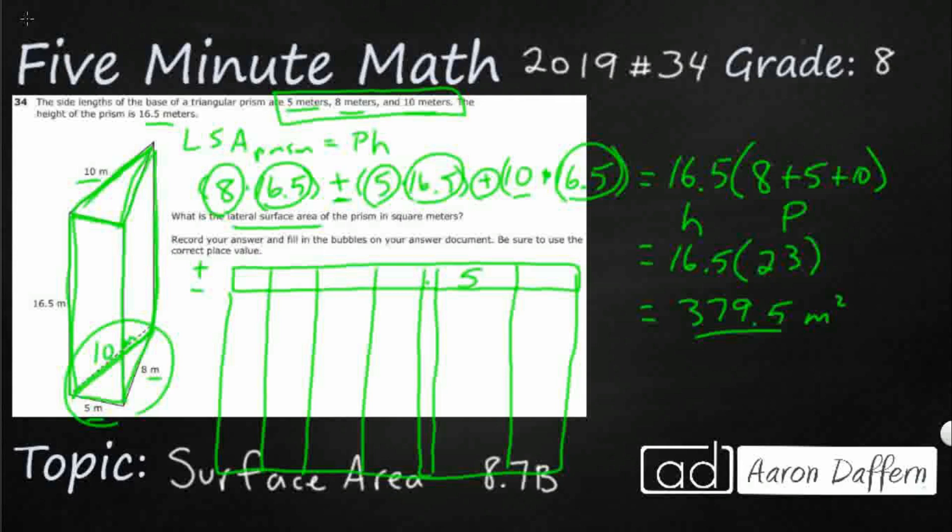Now I would just leave that as a blank. If you put that hundredths spot as a zero, that's going to be fine, but there's no need to do that. We're just going to do 379.5, and then just make sure you bubble in the correct bubbles underneath, and that's your answer.